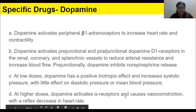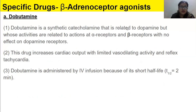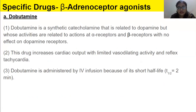At higher doses, dopamine activates alpha receptors and causes vasoconstriction with a reflex decrease in heart rate. Now, dobutamine is a synthetic catecholamine related to dopamine, but its activities are related to actions at alpha receptors and beta receptors with no effect on dopamine receptors. This drug increases cardiac output with limited vasodilating activity and reflex tachycardia.